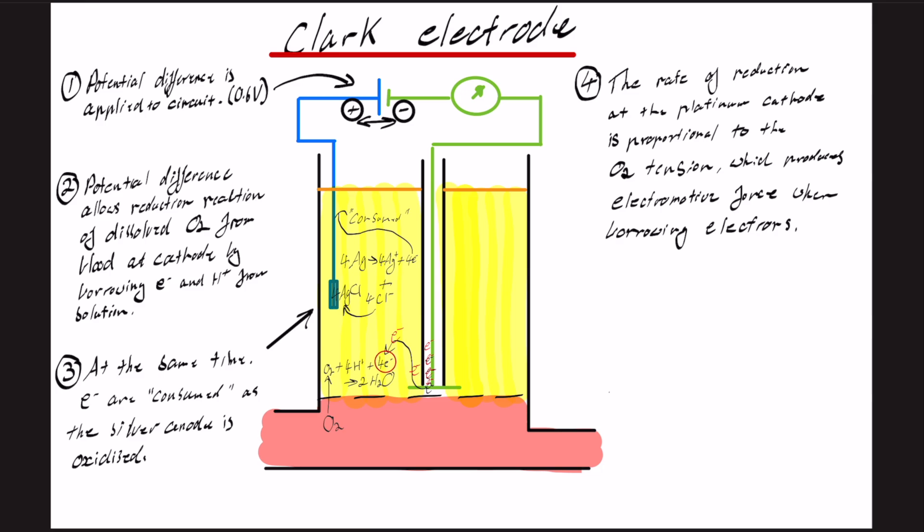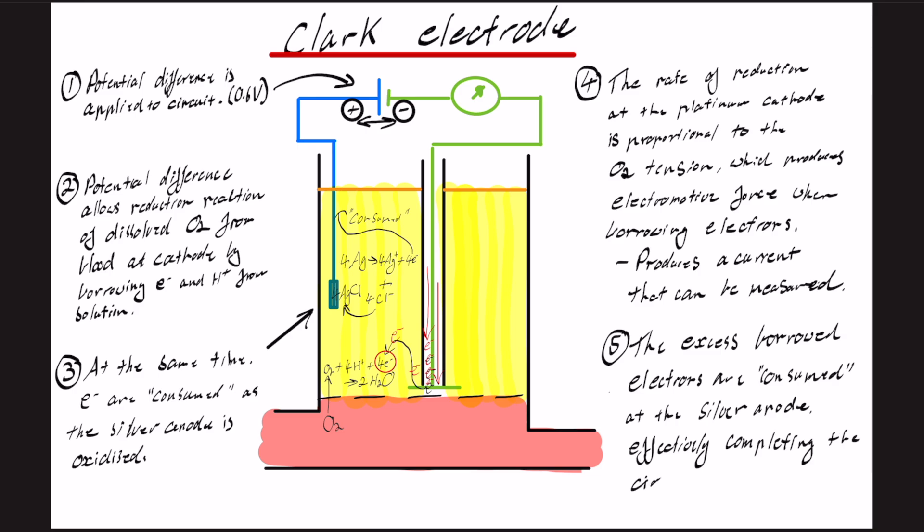And you can see here, the electrons coming down the cathode and helping the reaction with oxygen. And it produces this electromotive force going down the cathode in red here. And the excess borrowed electrons are in a way consumed in quotation marks at the silver anode, effectively completing the circuit.